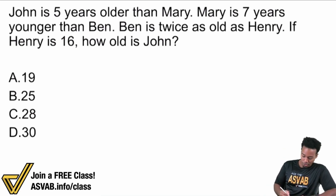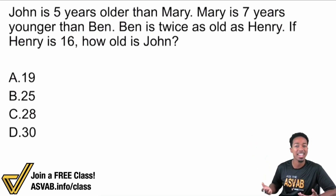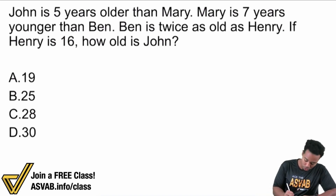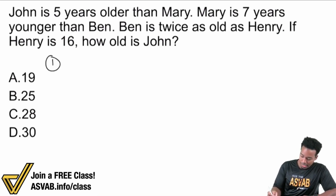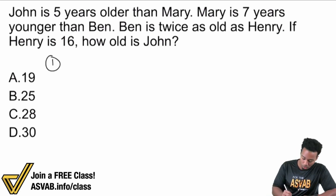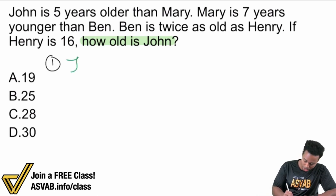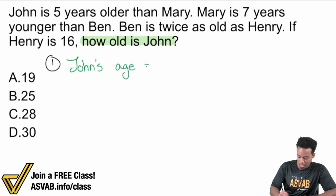First things first, I don't care what kind of problem we're dealing with. Obviously this is an age word problem, but I don't care. The first thing you always need to do is start with the question. Step one: start with the question — what is it that we want? It says, 'If Henry is 16, how old is John?' That's the goal. You need to be very, very good at pointing out the goal. How old is John? That's all I want — John's age equals blank.